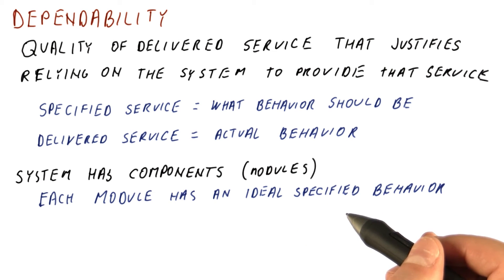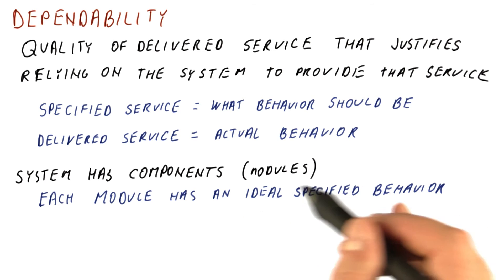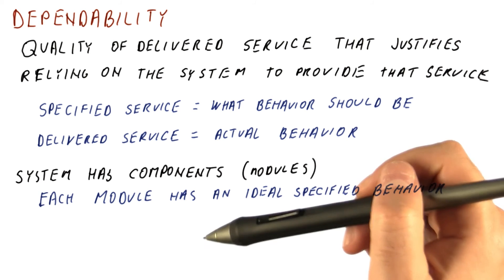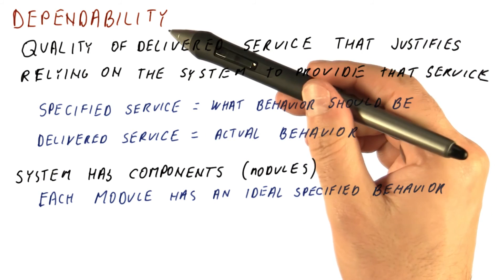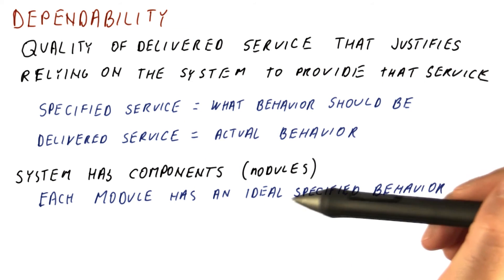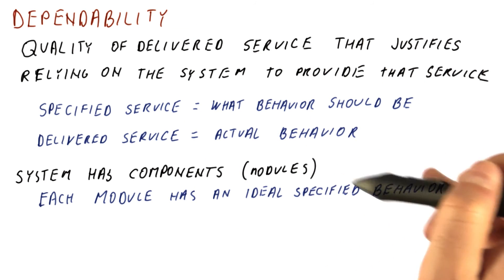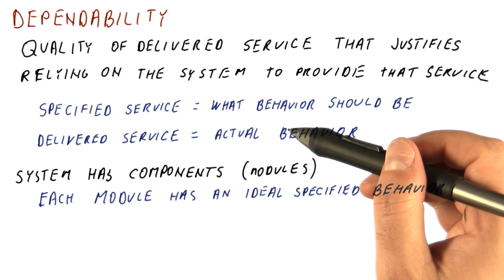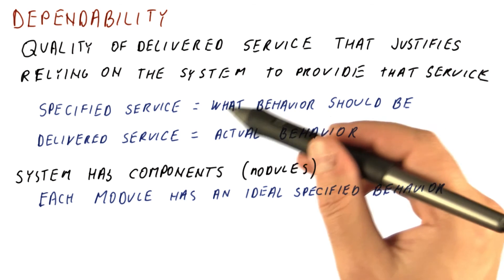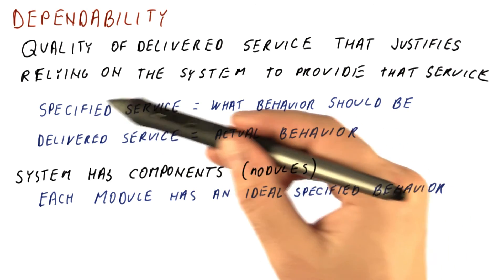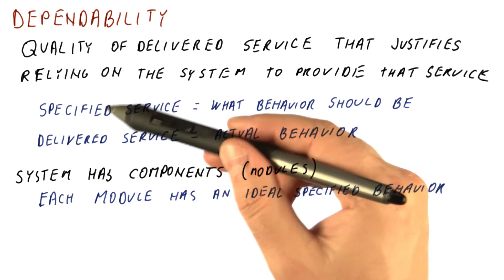Real modules will maybe not always exhibit this ideal behavior. So when we talk about things that make the system not be dependable, we're really talking about modules deviating from specified behavior, and that causing the system to deviate so that the delivered service no longer matches the specified service.